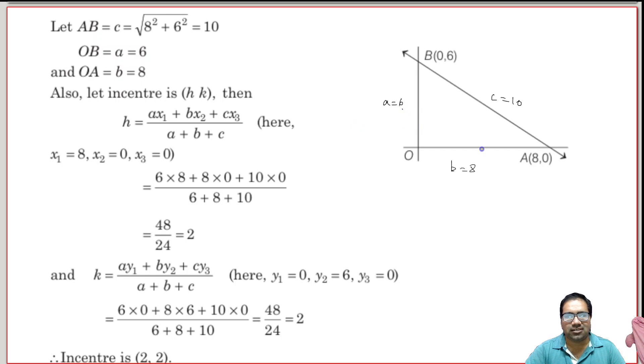Here A is 6, so 6 into 8 plus B into 0 plus 10 into 0. That is 48 divided by A plus B plus C: 10 plus 8 plus 6 is 24. So 48 by 24 is equal to 2. The point is somewhere here.